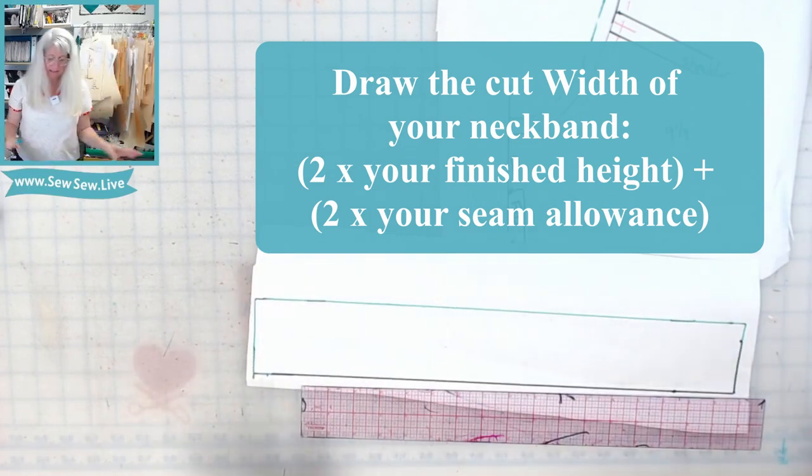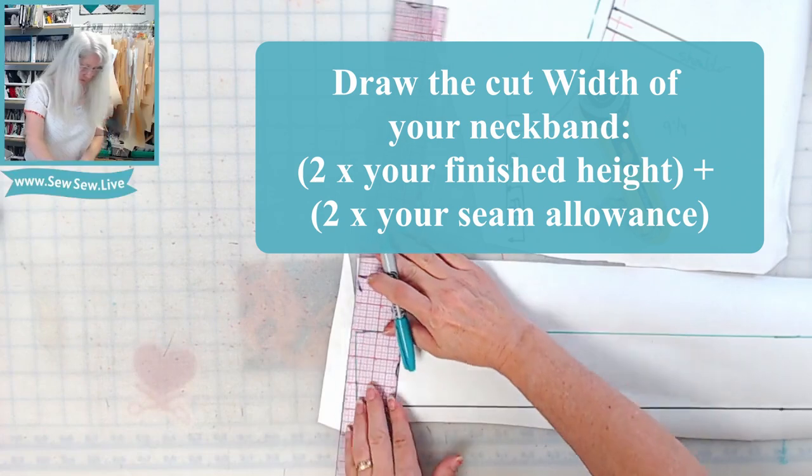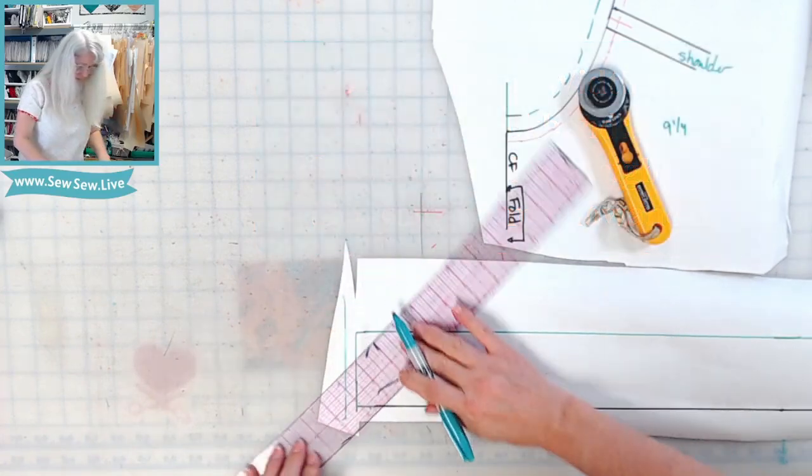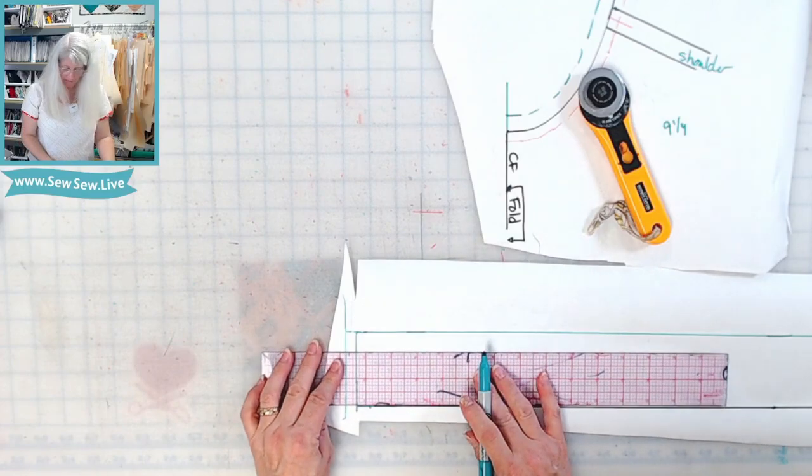All right, so lastly all this needs is seam allowance on either end. We'll add it just like that and now we have our pattern piece for any fabric.